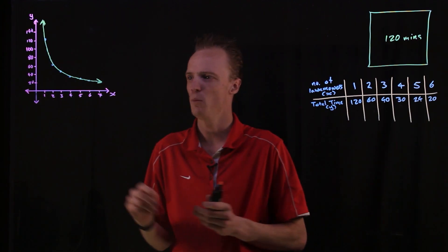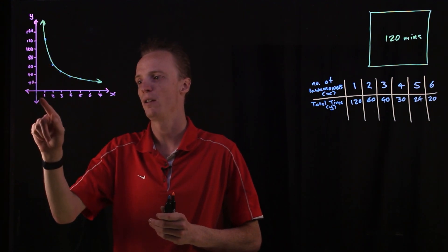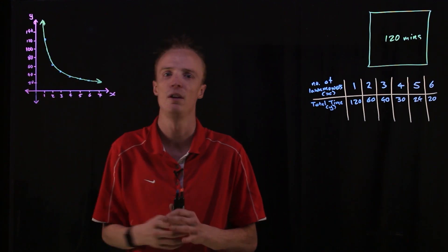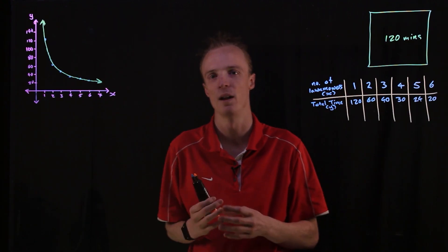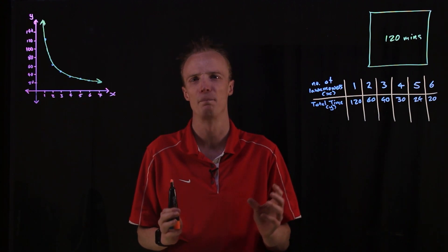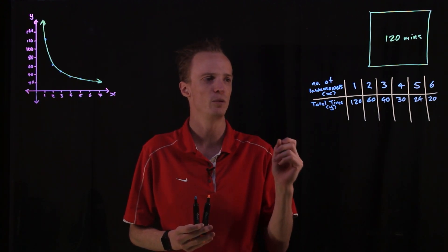And if we were to look at what's happening as this x value approaches the value of zero. So I know in our problem here that x can never be less than one, because you've always got to have one person at least mowing it. But let's look at the theoretical side of it.